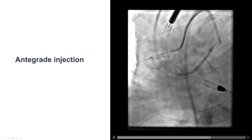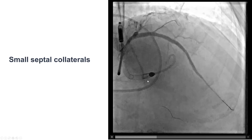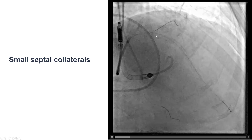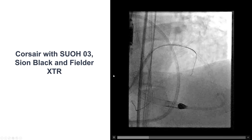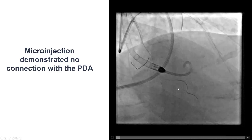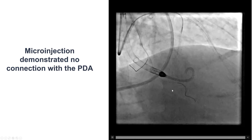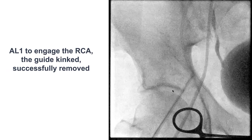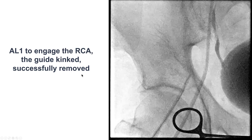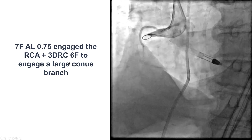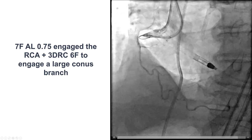Here is an injection through an antegrade Corsair microcatheter. We had a small branch coming off at the proximal cap and the septals were not optimal. We had a recently placed stent in the LAD. We did surfing of the septal branches using Sion Black, Fielder XTR, and SUO3, but unfortunately we could not cross — there was no continuous connection between the septal branch and the posterior descending artery. We also had some difficulty getting an AL guide to the right coronary artery; the guide was kinked but was replaced. We then had an AL guide engaging the RCA and a separate guide to opacify the conus branch filling the distal vessel — essentially a dual injection within the same artery.